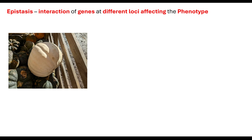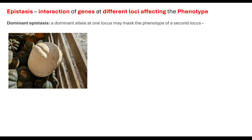So what is epistasis? Epistasis is an interaction of genes at different loci, which are going to affect the phenotype of the organism. It can be dominant epistasis — if it's dominant epistasis, what it means is that a dominant allele at one locus may mask the phenotype of a second locus.